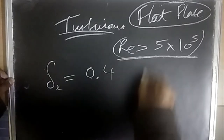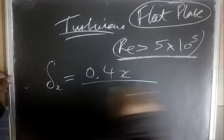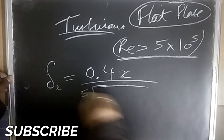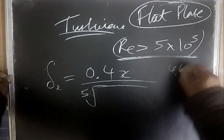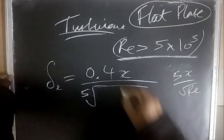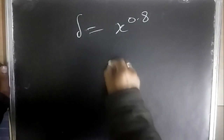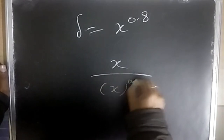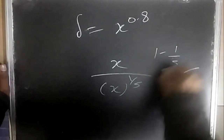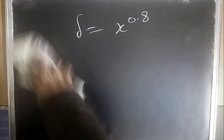For turbulent boundary layer: δ = 0.4x / (Re_x)^(1/5), also written as 0.4x / Re_x^0.2. Since x is divided by x^(1/5), δ ∝ x^(1 - 1/5) = x^(4/5) = x^0.8. Compare with laminar (x^0.5) — turbulent boundary layer grows faster.